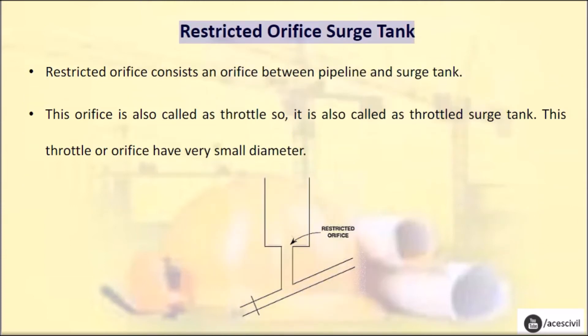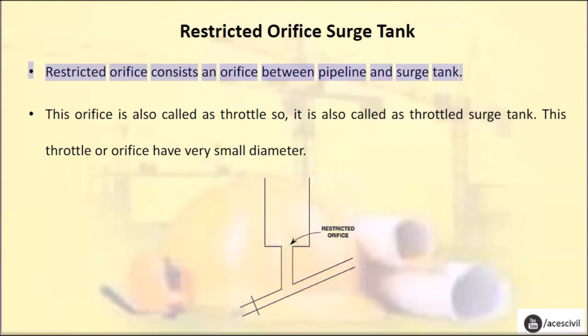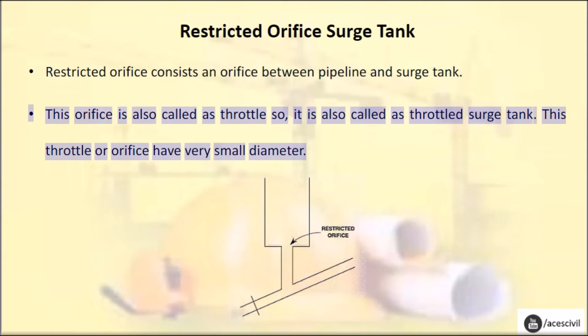Restricted orifice surge tank: A restricted orifice consists of an orifice between the pipeline and the surge tank. This orifice is also called a throttle, so this type is also called a throttled surge tank.